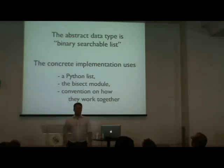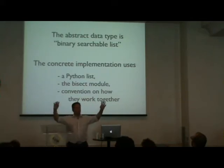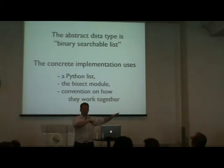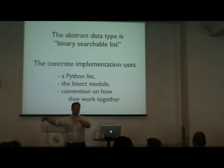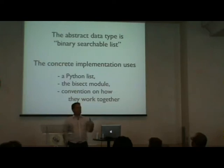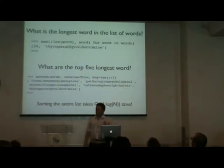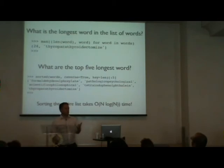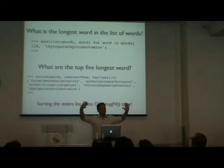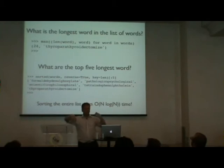Going back to the concept of abstract data types: the sorted list you can binary search is implemented as a Python list plus functions from the bisect module, plus the convention that you always work with it in sorted order. There's no actual Python class for 'binary searchable sorted list'. Now, I have this word list and I start asking questions. What is the longest word? I take the word list, iterate through each one using a generator expression getting (length, word) tuples, and call max().